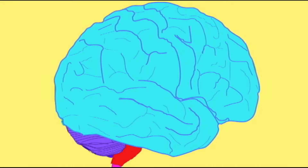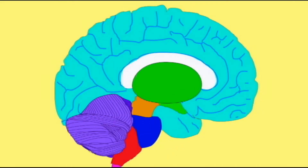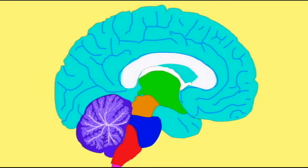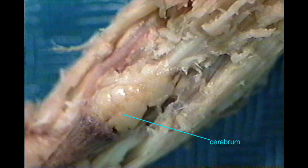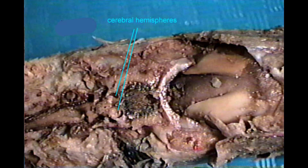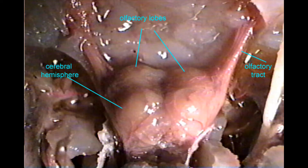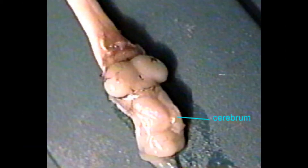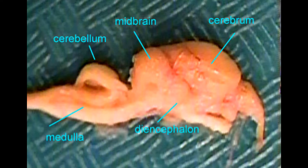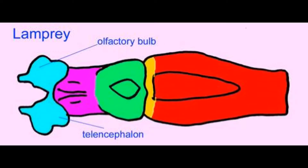The human cerebrum is depicted here in aqua. Are humans the only individuals that possess a cerebrum? No — this is a feature of every brain going back to the first vertebrates, as can be seen here in the hagfish, lamprey, shark, perch, frog, and turtle, all of which possess a cerebrum.